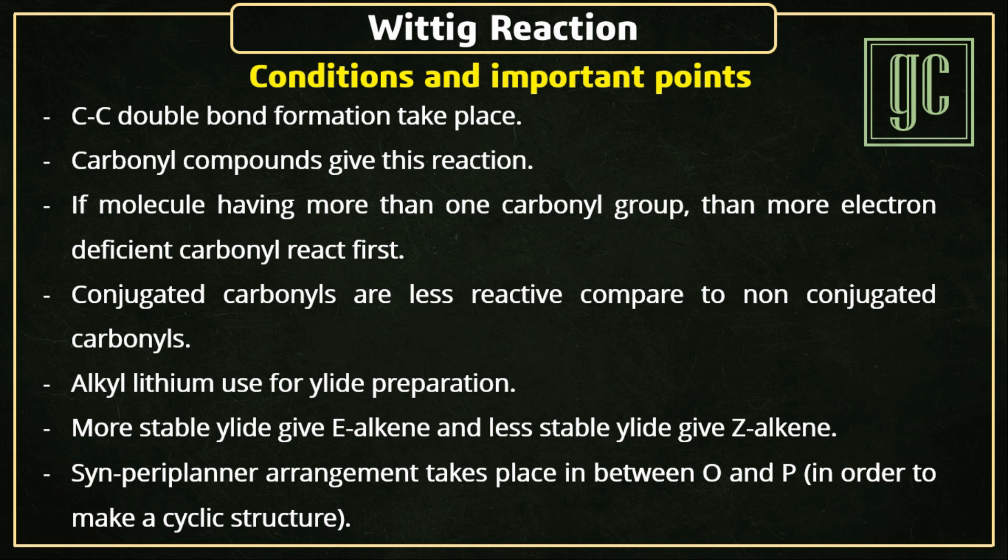Alkyl lithium is used for ylide preparation. More stable ylide gives E-alkene and less stable ylide gives Z-alkene. Syn-periplanar arrangement takes place between oxygen and phosphorus in order to make a cyclic structure.